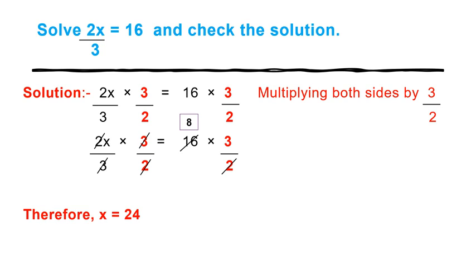Why? Because we have to eliminate 2 by 3, so we have to multiply both sides by 3 by 2. So look at the second step. 2 and 2 cancel, 3 and 3 cancel. Then 2 ones are 2, and 2 eights are 16. So what is left?